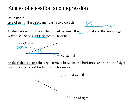The angle of depression is the other way around. It's the angle formed between the horizontal and the line of sight when the line of sight is below the horizontal.